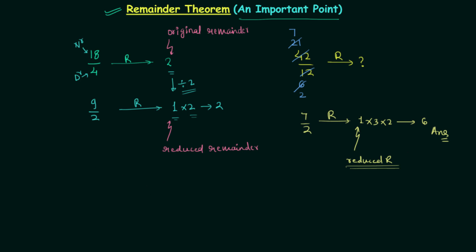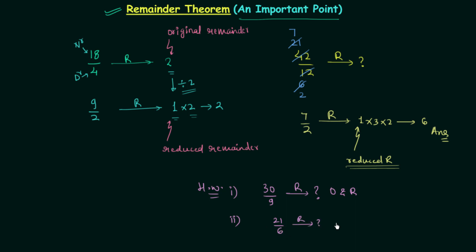Now we will move to the homework problems. In the first problem, 30 is divided by 9 — calculate the remainder, and you need to provide both the original and the reduced remainder. In the second problem, 21 is divided by 6 — again, tell me the original and the reduced remainder. Once you have your answers, post them in the comment section. I will end this lecture here — see you in the next one.